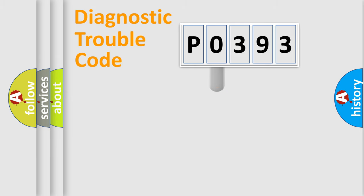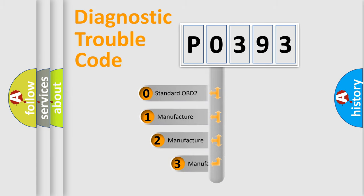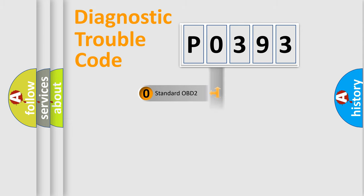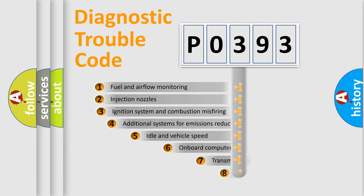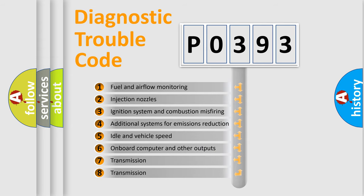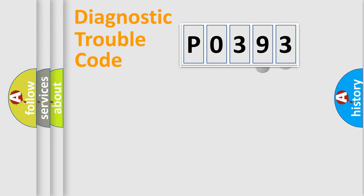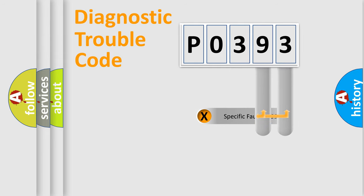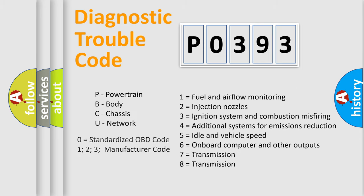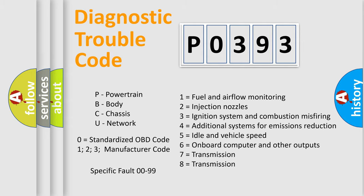This distribution is defined in the first character of the code. If the second character is expressed as zero, it is a standardized error. In the case of numbers 1, 2, or 3, it is a more specific car-manufacturer error. The third character specifies a subset of errors. This distribution is valid only for the standardized DTC code, and only the last two characters define the specific fault of the group.